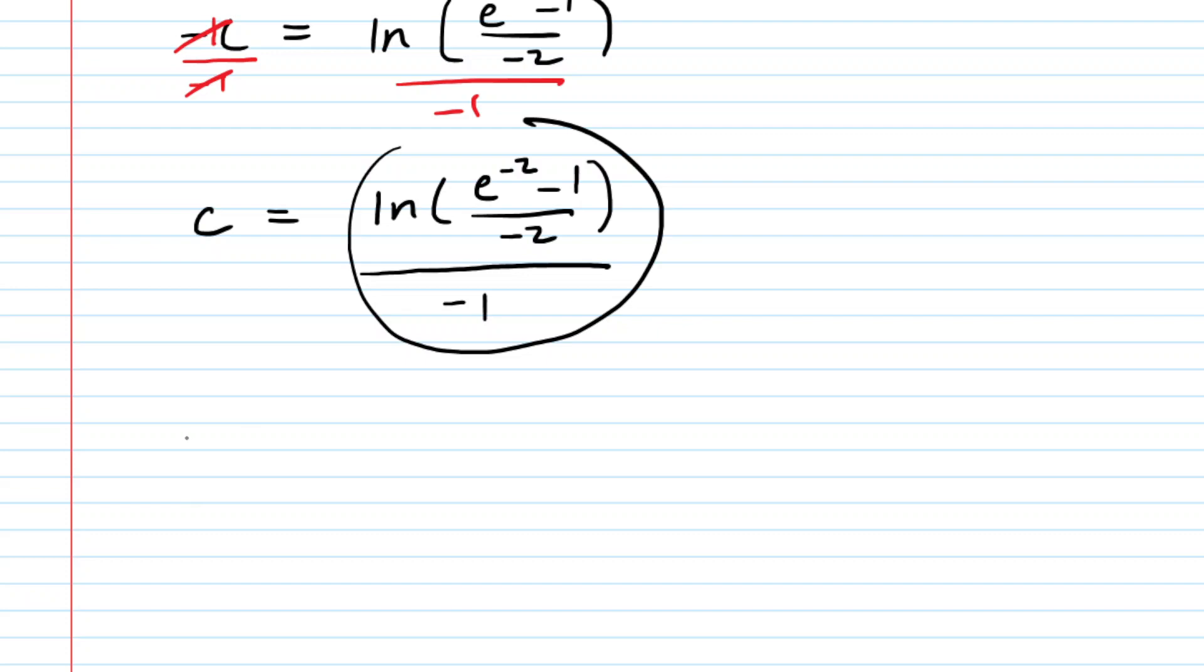And so this is the value of c. Admittedly, it's a bit hideous. So perhaps to bring it back down to earth, we can type that into a calculator. And when we do that, we will obtain an approximate value of c of about 0.84.